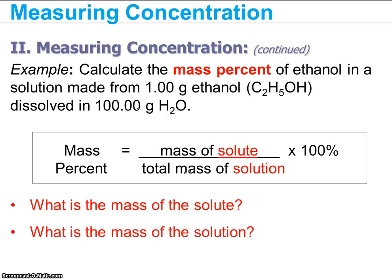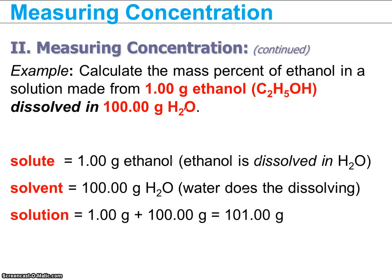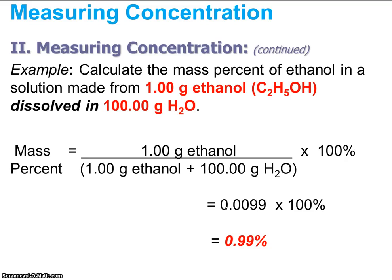For example, if we wanted to know the mass percent of ethanol in a solution that has one gram of ethanol and 100 grams of water, we need to first consider what is the mass of the solute and what is the mass of the solution. This is a little tricky because the 100 grams given is the solvent, not the solution. So the solution is actually both of them together, which is 101 grams. Ethanol is the solute because it is what is dissolved, and water is the solvent. So we take one gram of solute over 101 grams total, giving us roughly 0.99%.